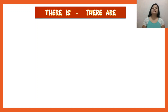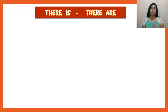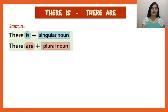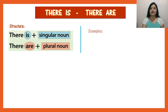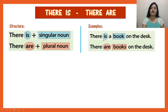Now I will focus on the words 'there is' and 'there are'. This is the grammar part. 'There is' and 'there are' in Spanish means 'hay'. We use 'there is' and 'there are' to talk about existence. We use 'there is' with singular nouns, and we use 'there are' for plural nouns. For example: 'There is a book on the desk' — book is singular, so we use 'is'.